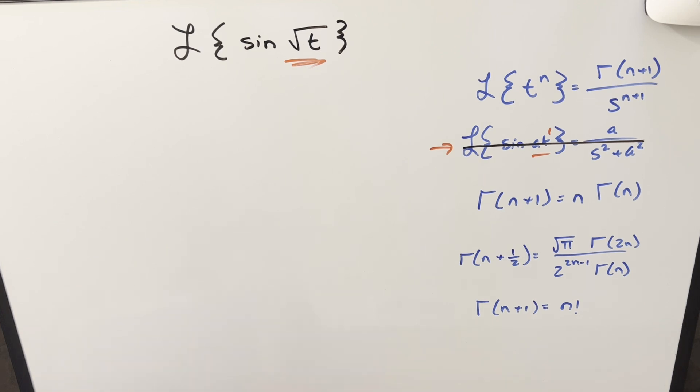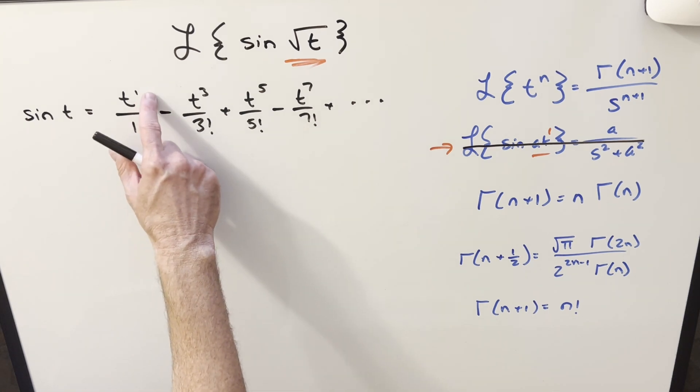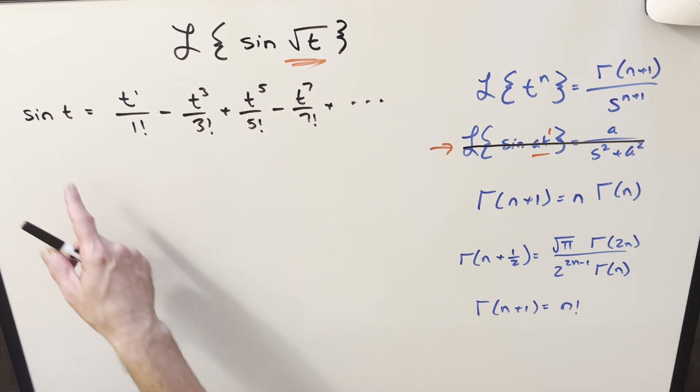What I want to do instead is let's just look at the power series expansion for sine of t. Okay, so here we have our power series for sine of t, just noticing that the exponent is odd on everything, which makes sense, sine is an odd function, so that's a good way to remember it.